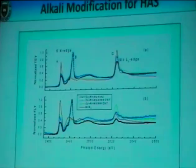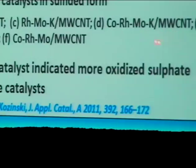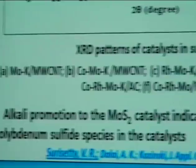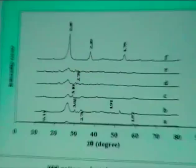This is a characterization analysis of our materials. XPS shows alkali-promoted molybdenum sulfide indicates more oxidized sulfate and molybdenum sulfide species in the catalyst. The XRD pattern for the desired trimetallic catalyst — 4.5% cobalt, 1.5% rhodium, 15% molybdenum, 9% potassium, about 30% total loading on multi-wall CNT — shows that these materials are very well dispersed, with no significant peaks visible for the active phases.